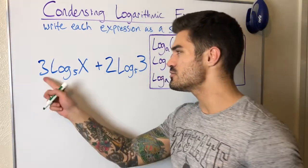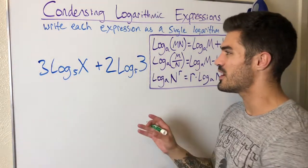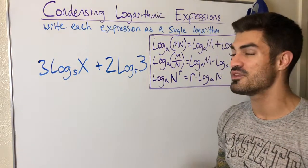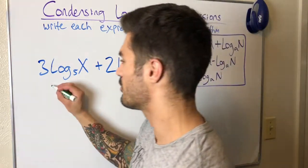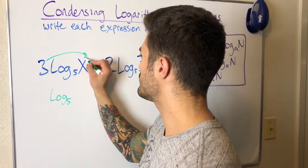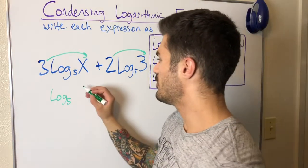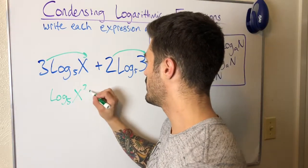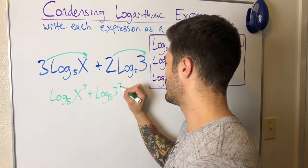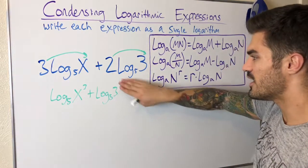The first thing I can do is move this 3 up to the exponent, as well as this 2, because I cannot combine these yet — I need to get rid of these constants being multiplied out front. Then I can combine these into a single logarithm. So that's my first step: this 3 is going up to the exponent spot as well as this 2, so I'm left with log base 5 of x cubed plus log base 5 of 3 cubed.